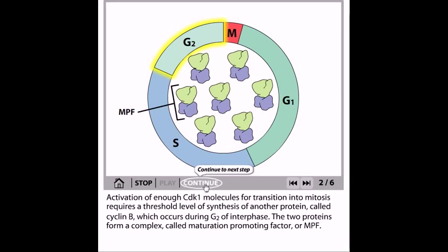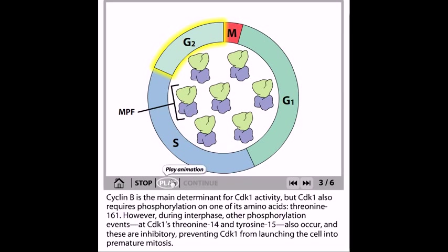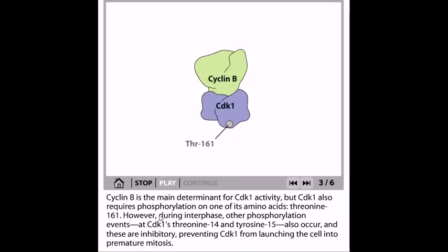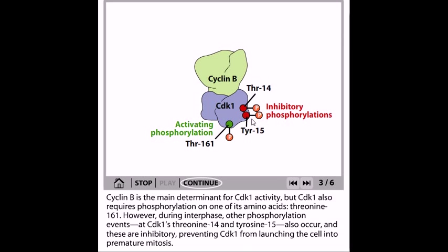The formation of this MPF along with CDK1 and cyclin B helps the cell to pass through and start the cell cycle events. Cyclin B is the main determinant for CDK1 activity, but CDK1 also requires phosphorylation of one of its amino acids, threonine 161. However, during the interphase, other phosphorylation events at CDK1's threonine 14 and tyrosine 15 are also important.